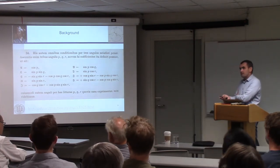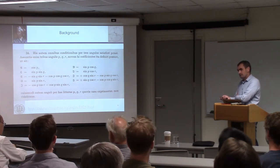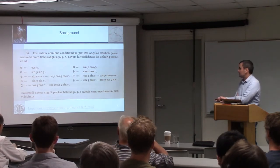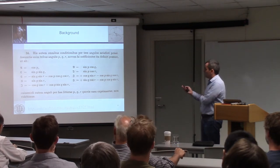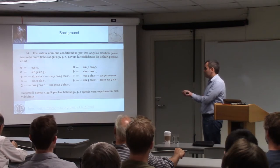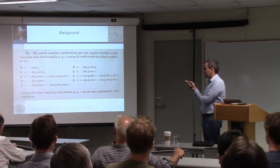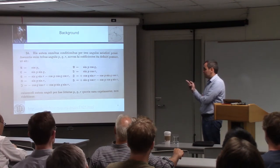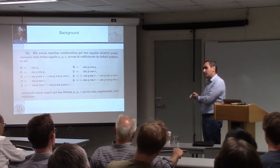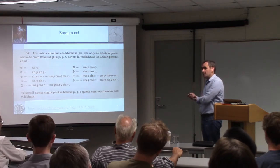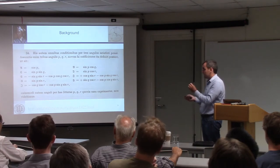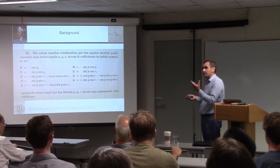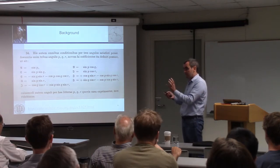Euler didn't use matrix notation at all — things like determinants didn't come in until the 1840s with Cayley. All the arguments he uses in these papers are based on spherical geometry. The explanation for Euler angles that we use today comes from Lagrange at the end of the 18th century, where he talks about three successive rotations — it's remarkably clear. What's really impressive is that Lagrange took all this information from Euler's papers and was using it to solve problems in celestial mechanics ten years later.